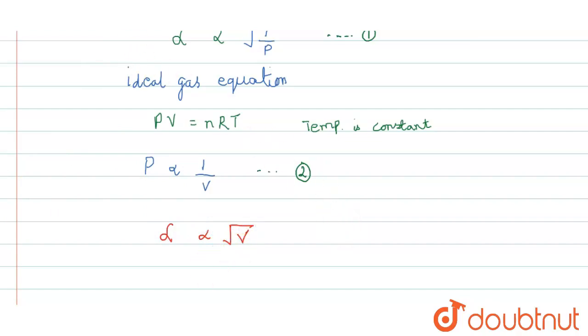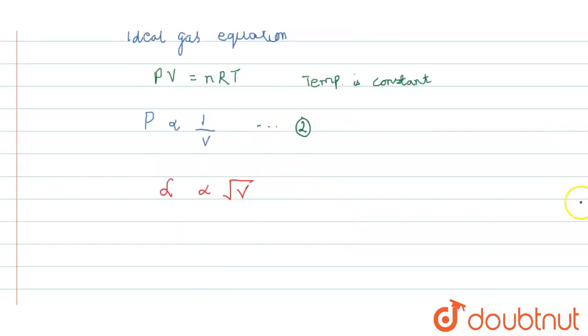So, we can write now, alpha 1 by alpha 2 equals square root of V1 by V2.